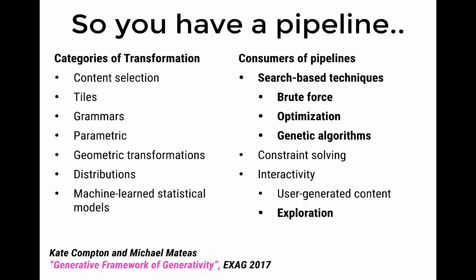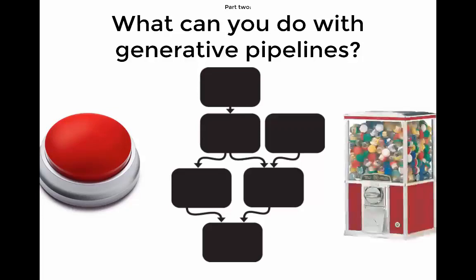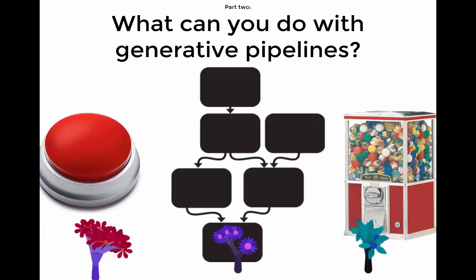So search-based techniques, brute force optimization and genetic algorithms, but also user exploration, which I think is one of the most interesting ones. Often we treat generative pipelines as a sort of magic button that we can press. We press a button and some content comes out. This is almost like a little capsule toy box where you turn the knob and you're going to get a different kind of content each time. So I'm going to re-roll a random seed and then I'll get some interesting piece of content out. I can press the button as many times as I want and I can get lots of different content.